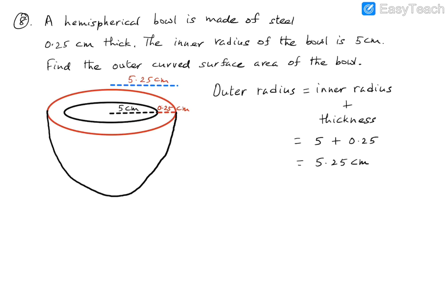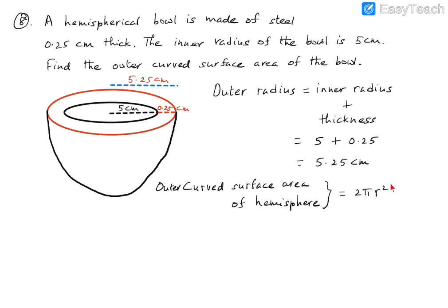We apply the formula for the curved surface area of a hemisphere, which is 2πr². Since we want the outer curved surface area, we use the outer radius. So that gives us 2 × (22/7) × 5.25², which is 5.25 × 5.25. When we perform this calculation, we get a value of 173.25 centimeters squared.